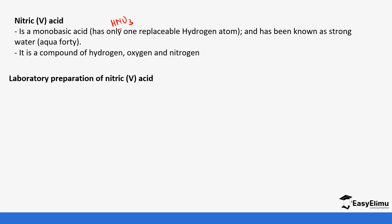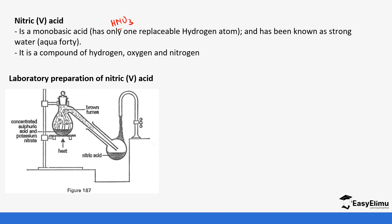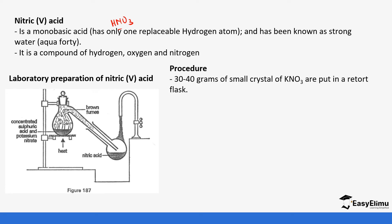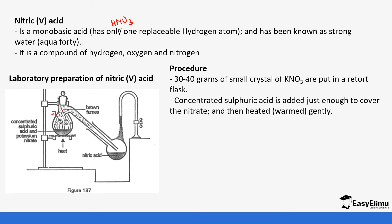Nitric acid can be prepared in the laboratory by the reaction of concentrated sulfuric acid and potassium nitrate. Some potassium nitrate is put in a retort flask, as you can see the retort stand is shown, and then some concentrated sulfuric acid is added, just enough to cover the nitrate, and then it is heated.